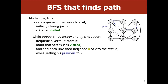In order to reconstruct the path, we can keep track of the previous node for each node. So, A's neighbors are B, E, and D, and we would say their previous was A. You will be implementing this on your homework, so think about how you should be keeping track of each node's previous when doing this algorithm.